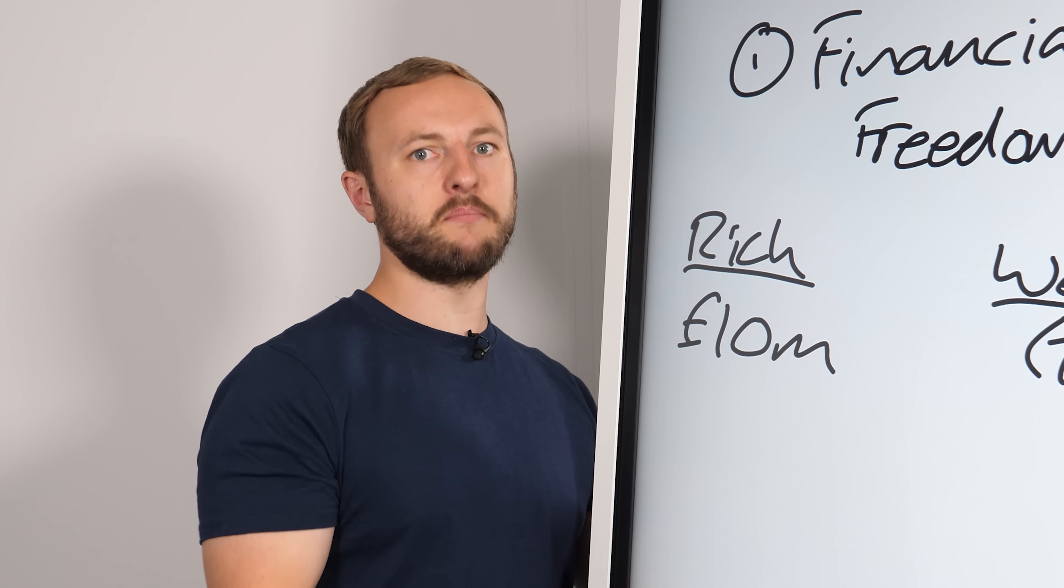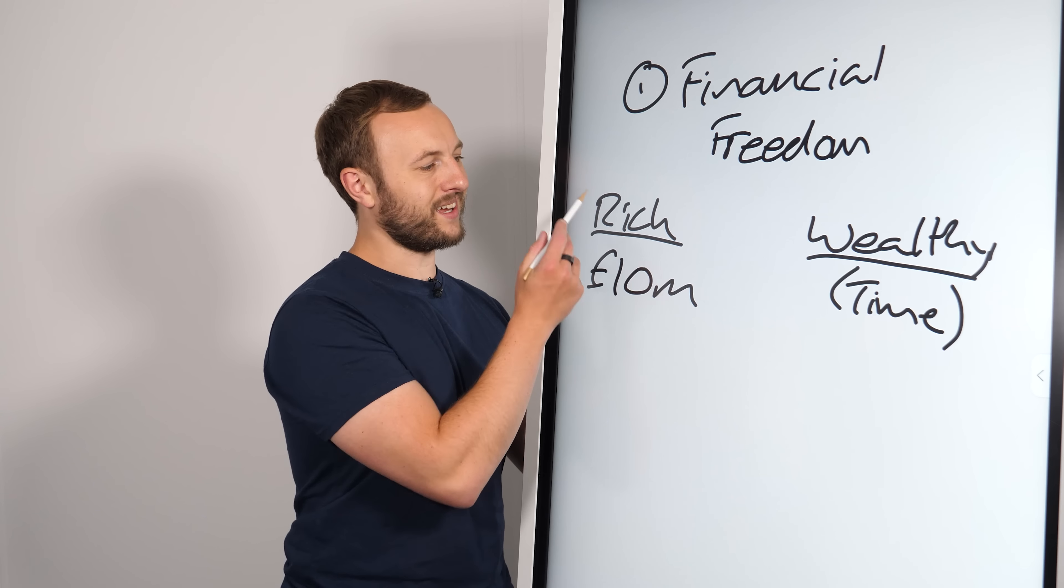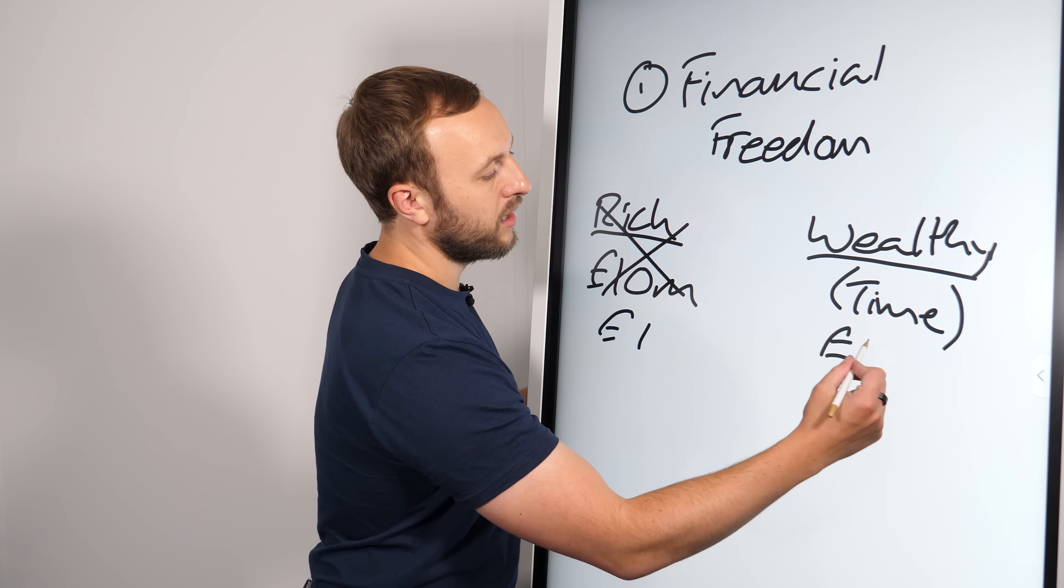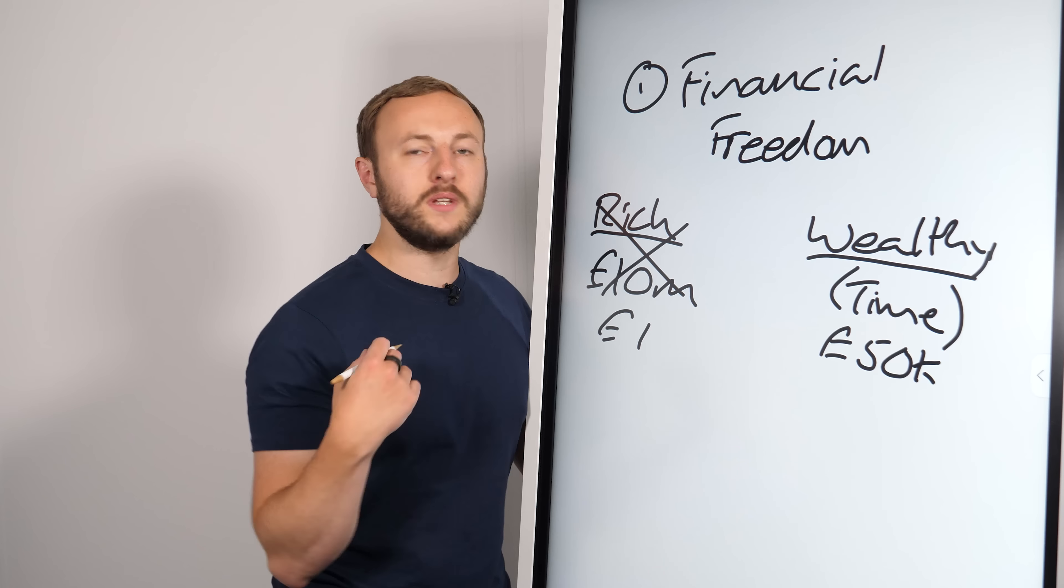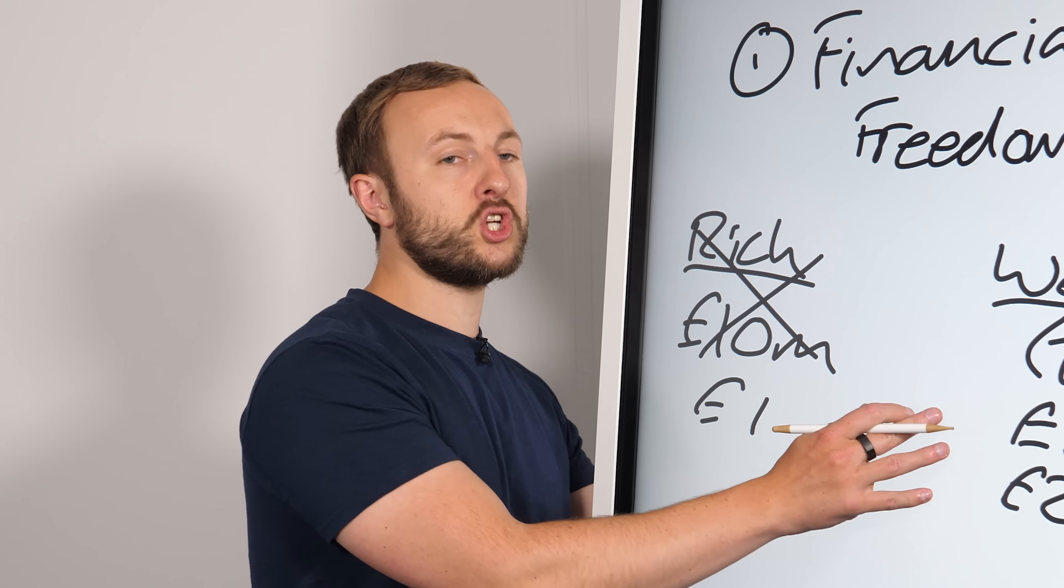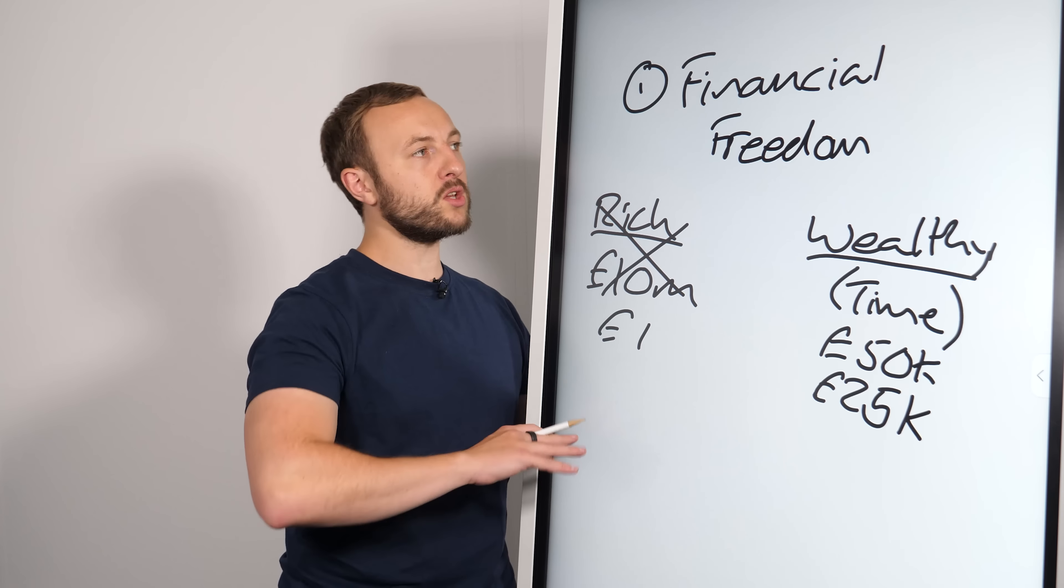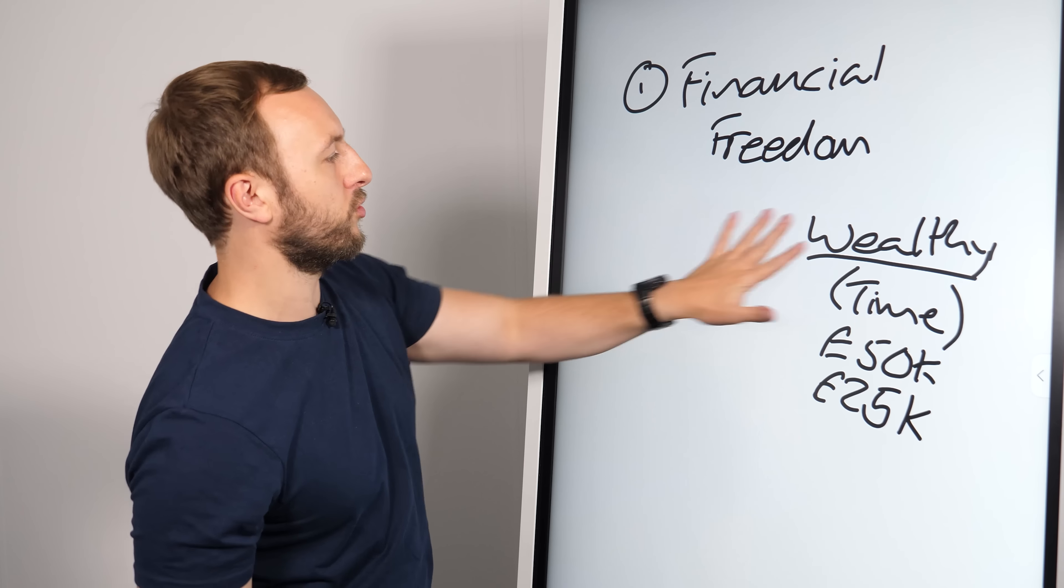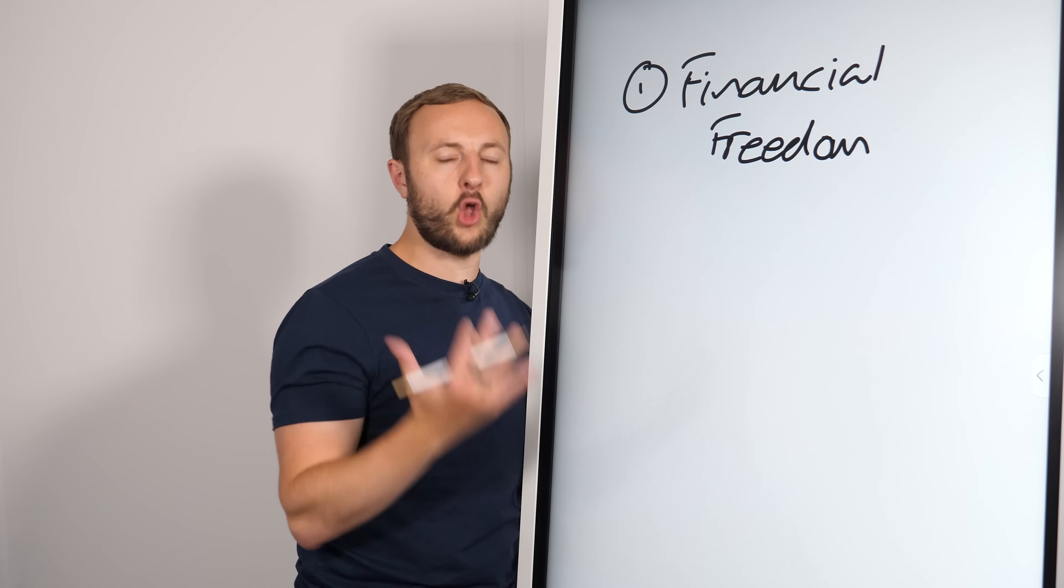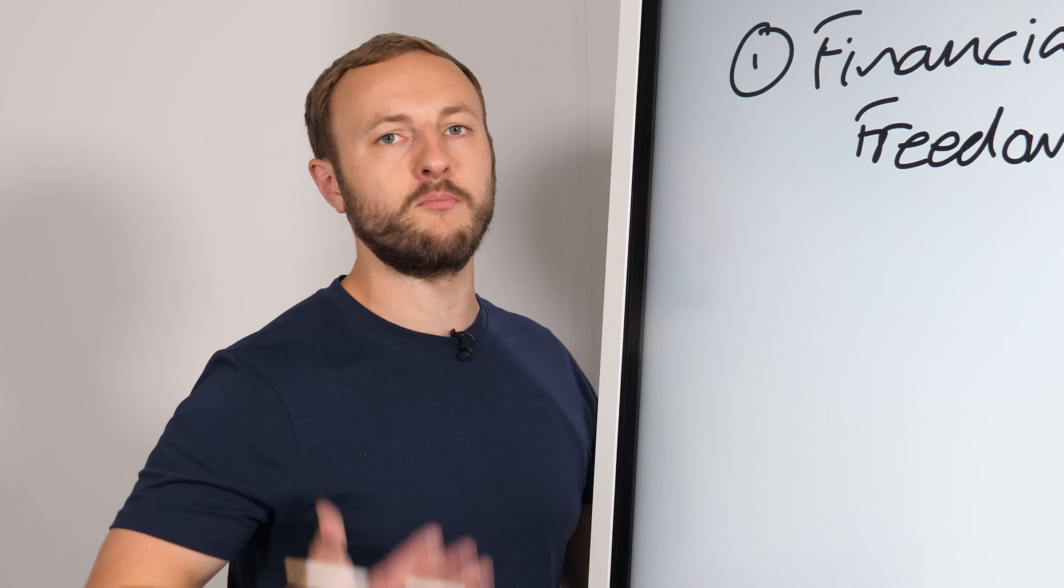So if you make 10 million a year, but you spend 9.9999 million, then you're not particularly wealthy because you're left with about one pound at the end of the year. Let's say you make 50,000 a year, but you only spend 25,000 a year, then you are very wealthy. The reason for that is each year you are making two years worth of living money.